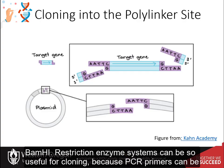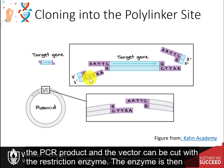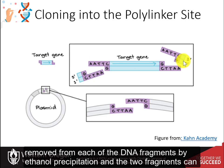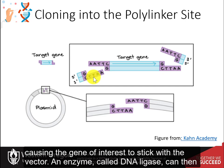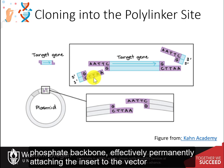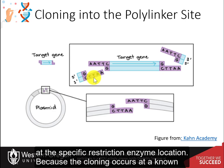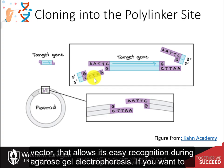Restriction enzyme systems are so useful for cloning because PCR primers can be engineered to contain the correct restriction sites at each end of the sequence, so that both the PCR product and the vector can be cut with the restriction enzymes. The enzyme is then removed from each of the DNA fragments by ethanol precipitation, and the two fragments can be mixed together. In some cases, the sticky overhangs of the insert will align with the vector, causing the gene of interest to stick with the vector. DNA ligase can then be added to seal the backbone and form a covalent bond of the sugar-phosphate backbone, effectively permanently attaching the insert to the vector at the specific restriction enzyme location. Because the cloning occurs at a known location within the vector, a very detailed sequence map can be made that allows easy recognition during agarose gel electrophoresis.